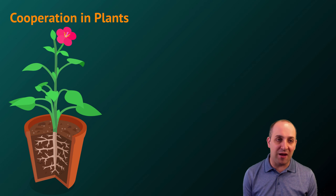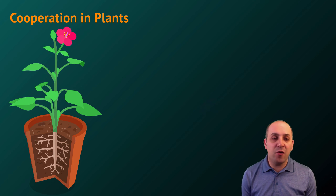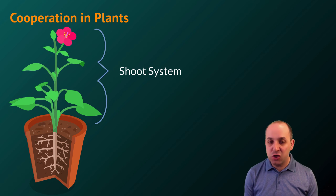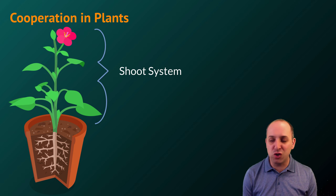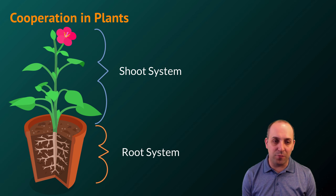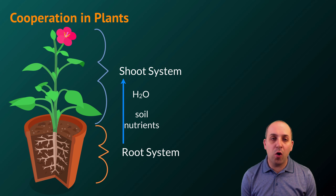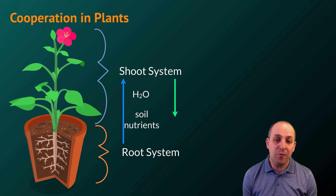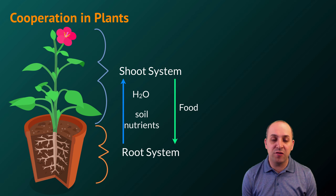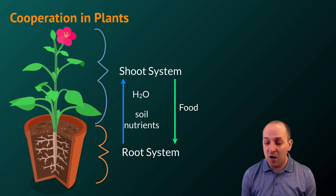Now let's move on to plants. Plants are really no different from animals in that they too have body systems, but they really have two systems: a shoot system and a root system. The root system transports water and nutrients from the soil to the shoot system, and the shoot system transports the food it produces through photosynthesis to the root system.